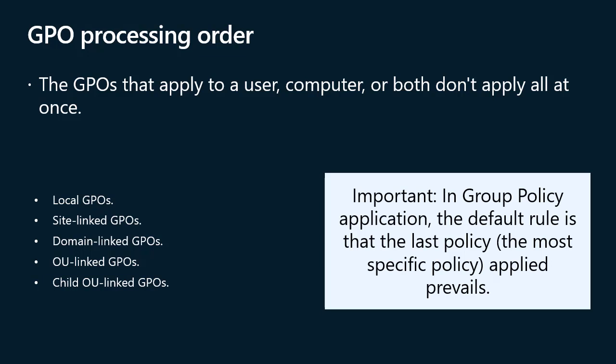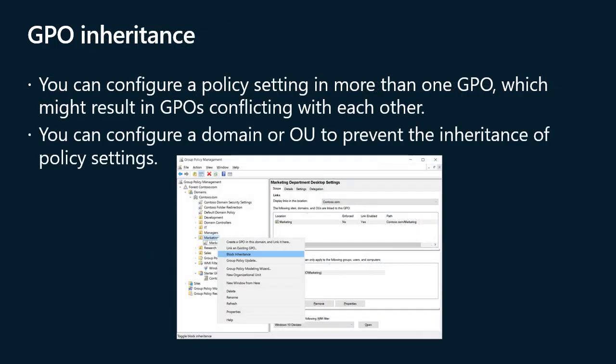You can also disable the user or computer configuration of a particular GPO independently. If one section of a policy is known to be empty, disabling the other section can speed up policy processing slightly. For example, if you have a policy that only delivers user desktop configuration, you could disable the computer section of the policy.